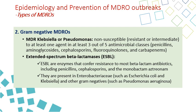ESBL, or extended-spectrum beta-lactamase, are enzymes that confer resistance to most beta-lactam antibiotics, destroying them and making them ineffective for treatment. These beta-lactams include penicillins, cephalosporins, and the monobactam aztreonam. ESBLs are present in several organisms, including Enterobacteriaceae, especially E. coli and Klebsiella, but also other gram-negatives such as Pseudomonas aeruginosa.